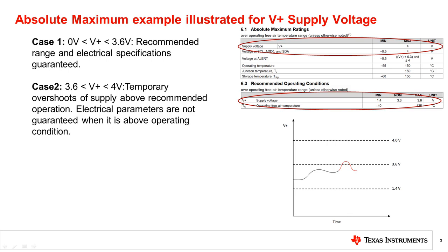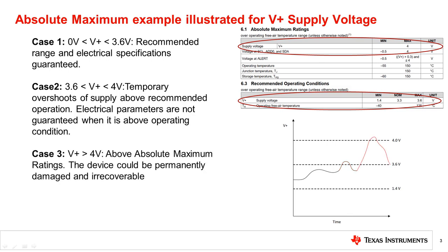In the third case, the transient spikes cause the device supply voltage to exceed the absolute maximum rating of 4 volts. In such a scenario, the device may be permanently damaged and irrecoverable. This would result in one or more electrical specifications of the device to produce an output which would violate the datasheet's electrical specifications. Such changes may or may not happen immediately, but sometimes manifest on prolonged use of a damaged device.